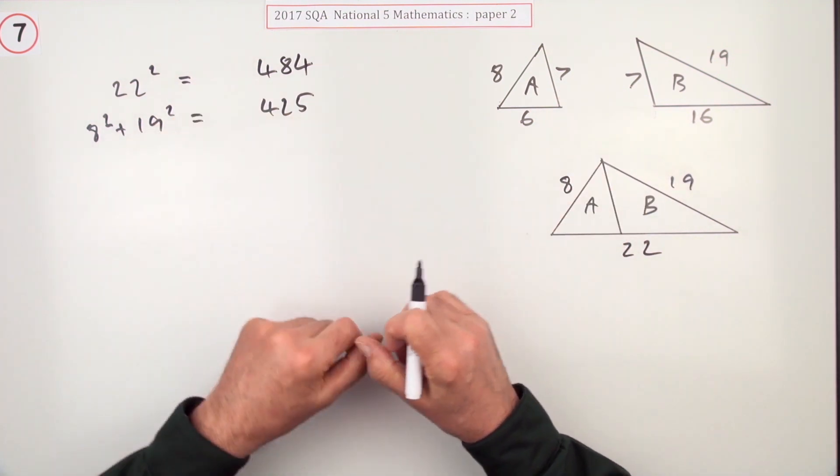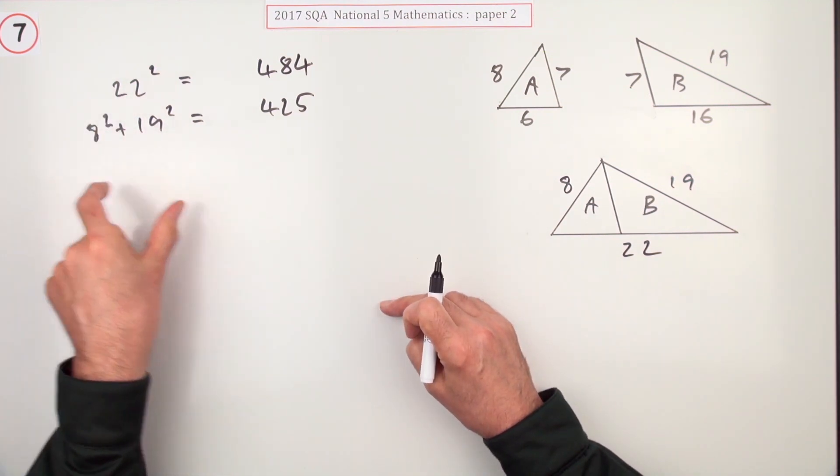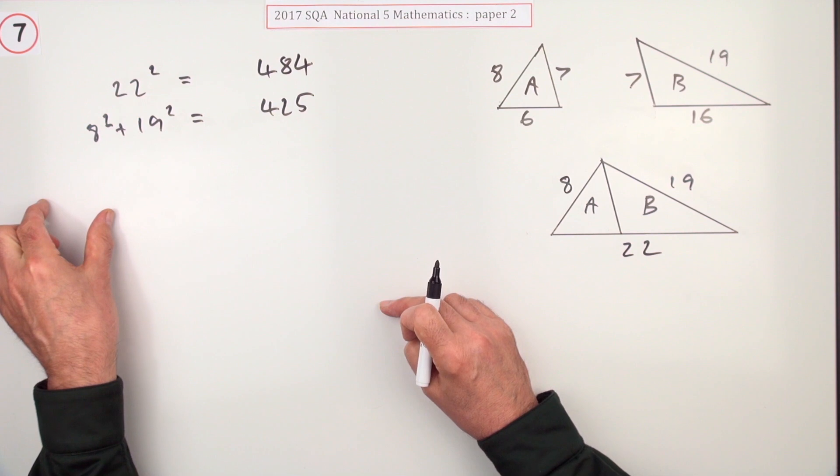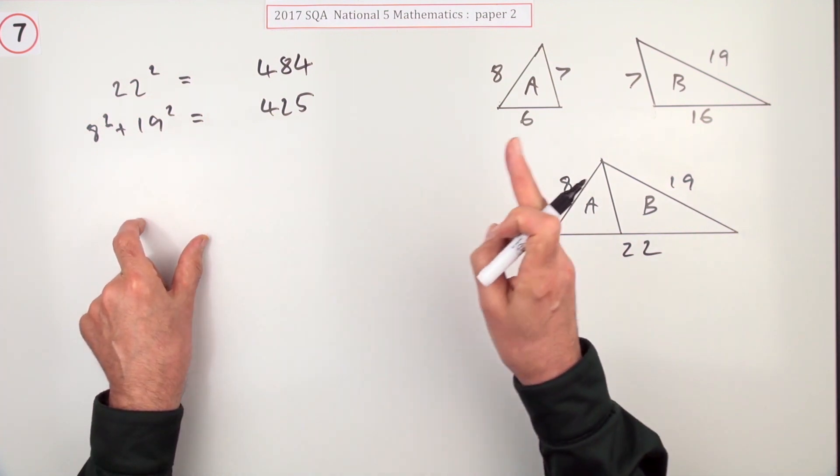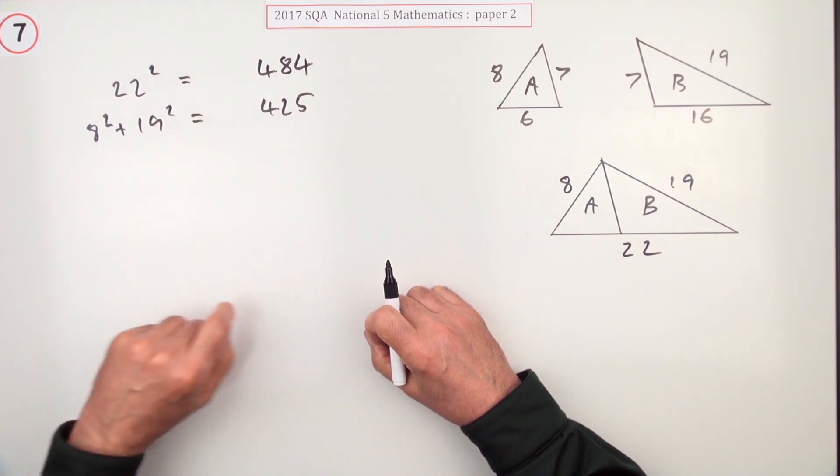Or you can think 22² is 22 times 22, that's 20 times 22 plus another two of them. Now 20 times 22 is 440, plus another 44 gives you 484.